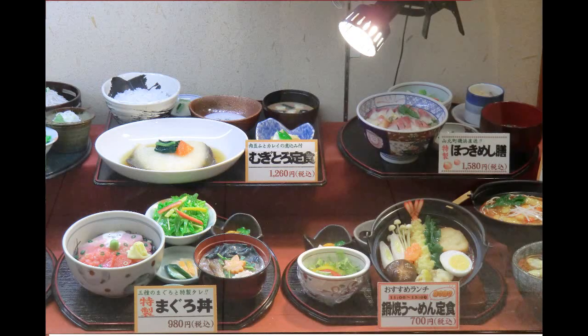Let's first learn some basic things about Japanese food. Whenever you enter a Japanese restaurant in Japan or in India, in most of the cases there is a display which shows the actual food — how it will look like — with their prices. You will be surprised to know that it is all made up of plastic and nothing is original, but it actually looks like the original food so that the customer can compare the price and have a look at the food.